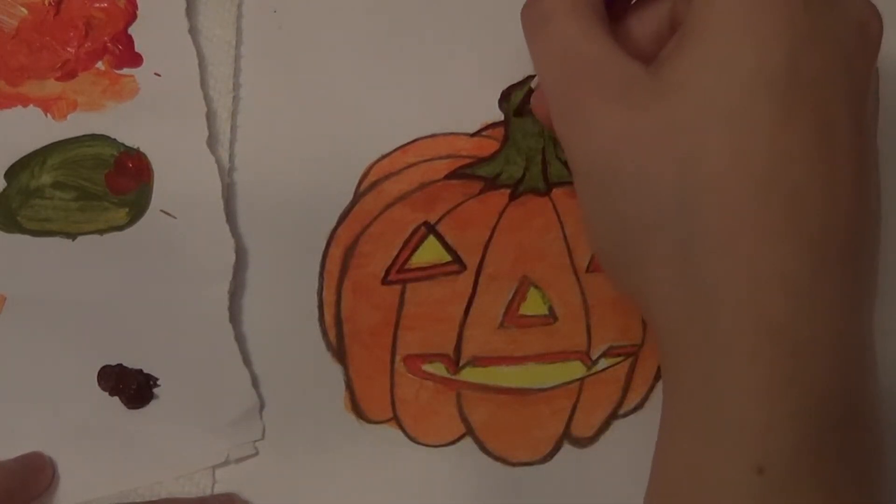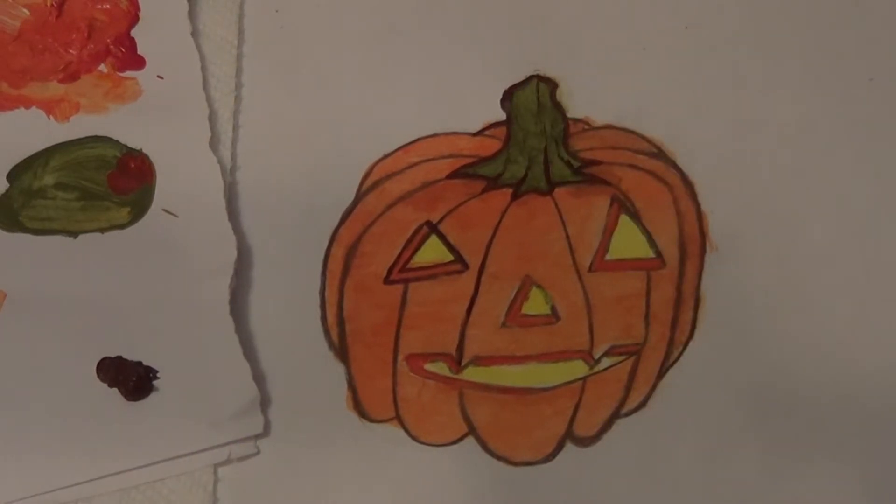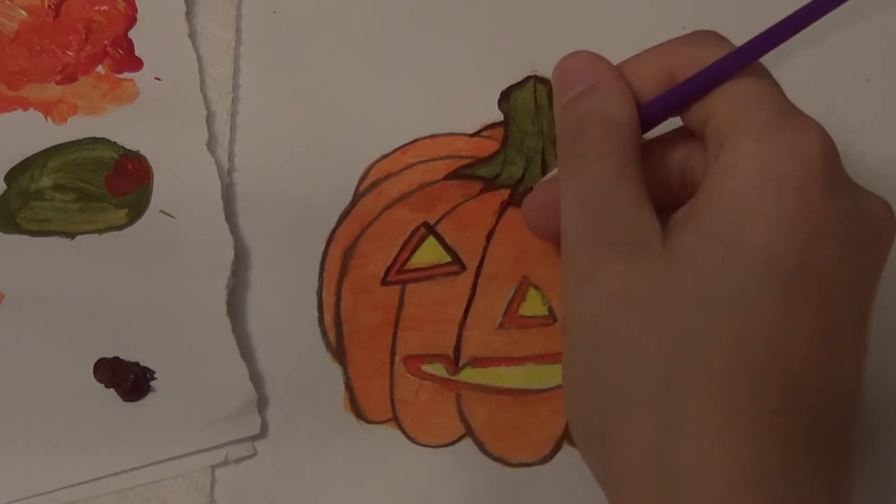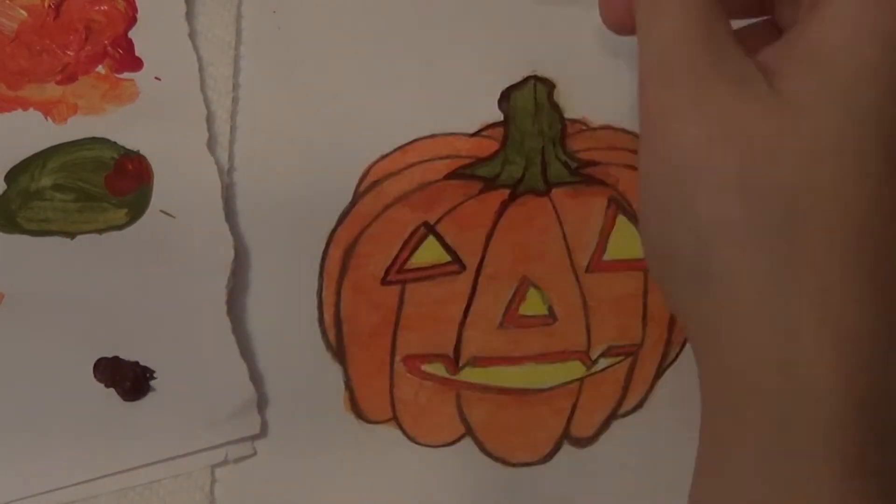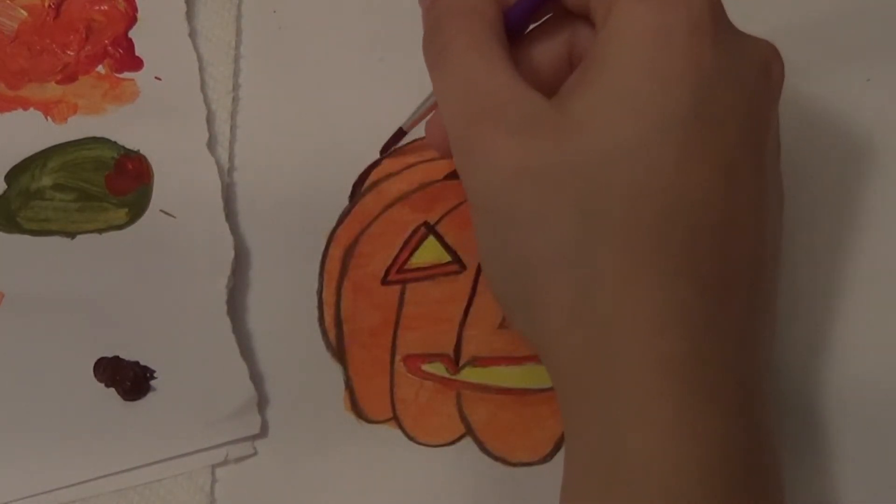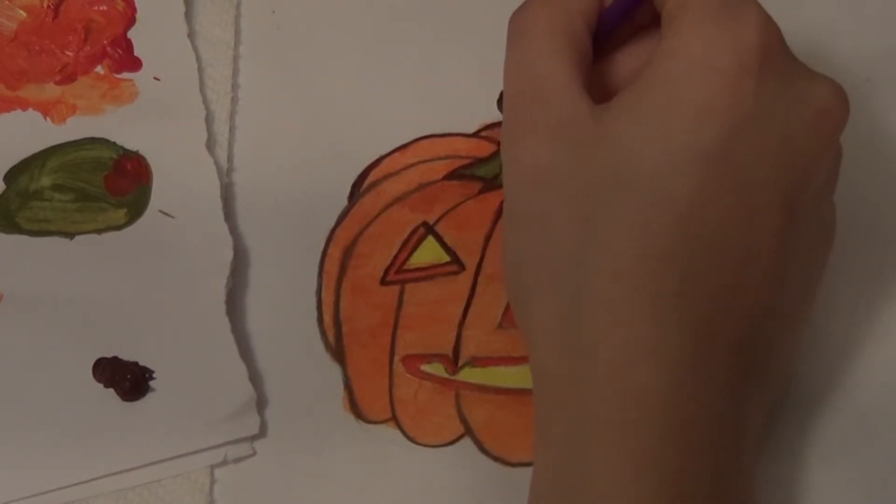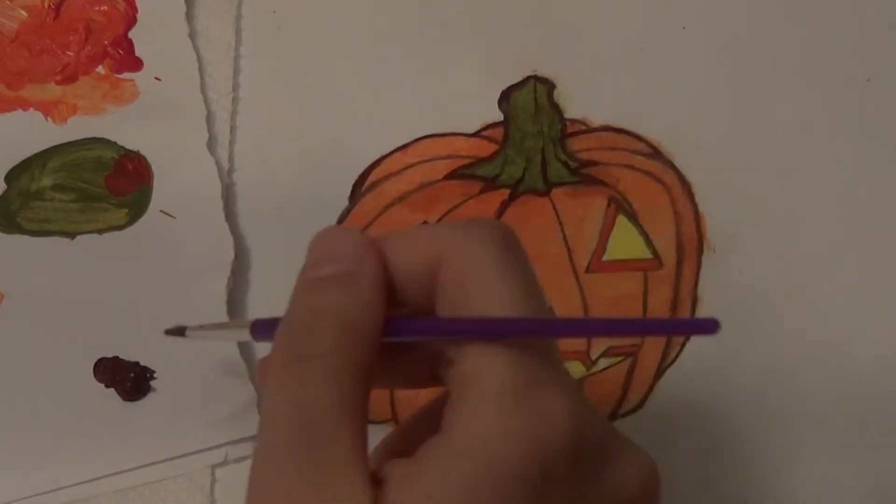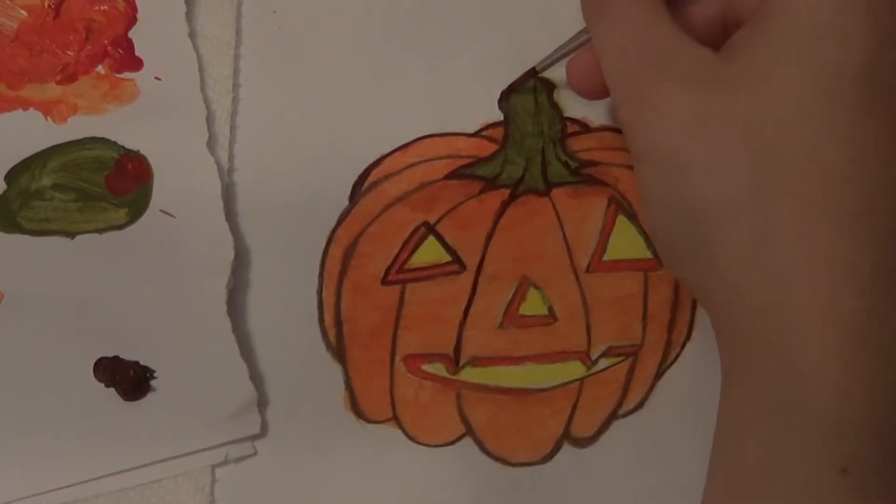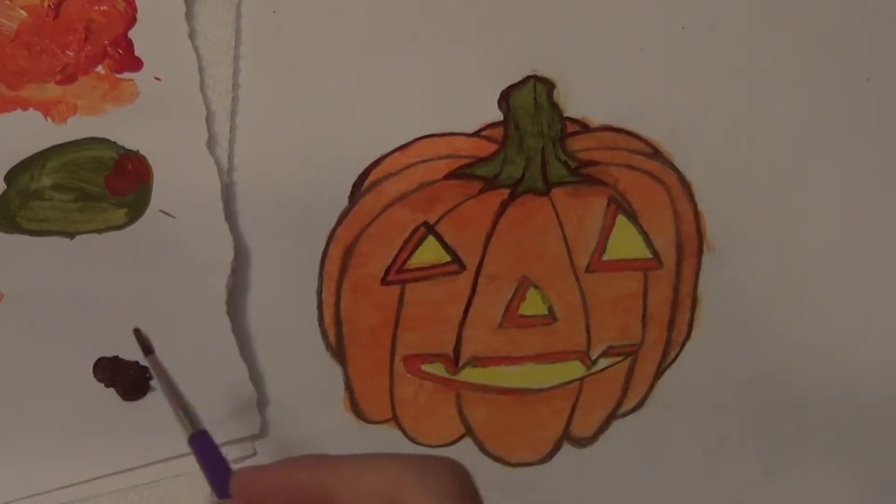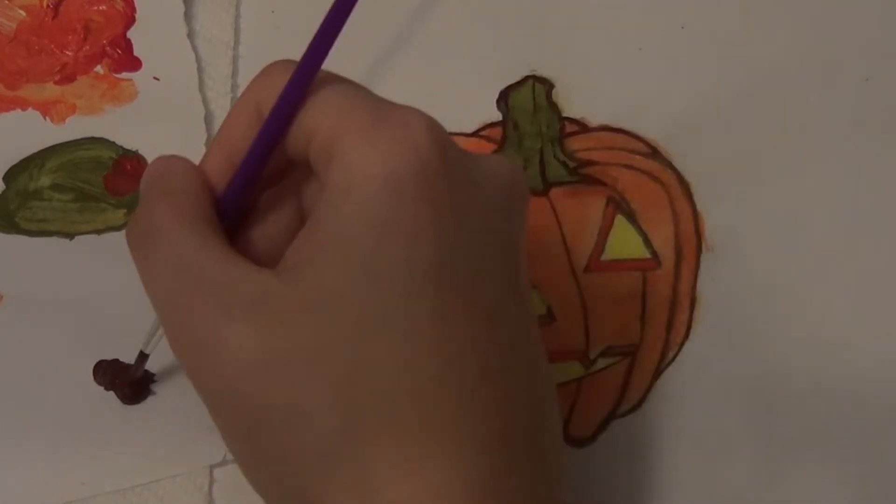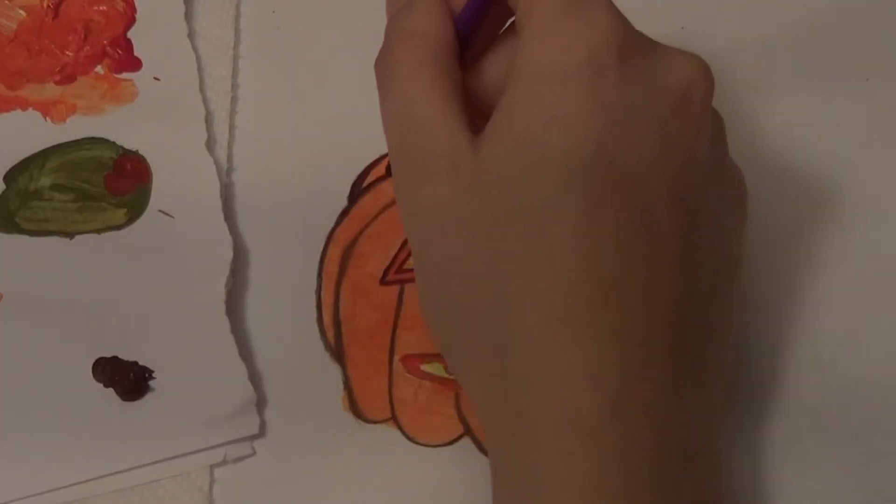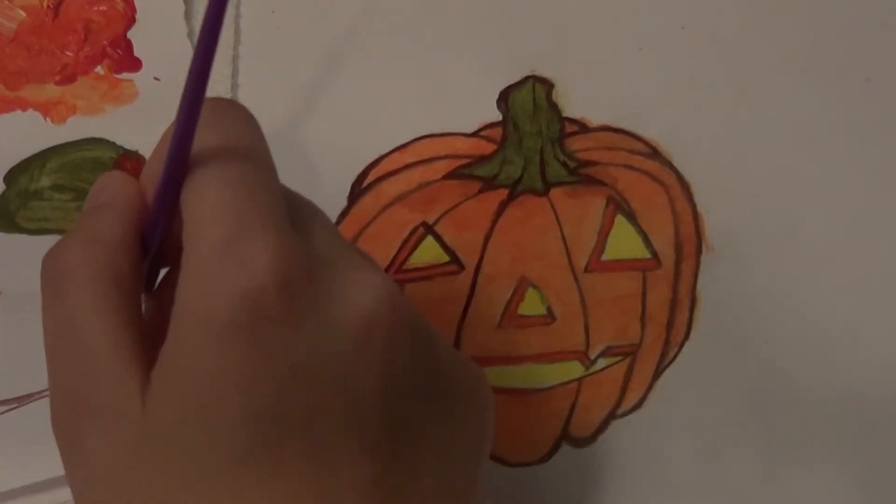So to make the jack-o-lantern look more three-dimensional and add some shading I'm going to make my brown lines a little thicker towards the bottom and then make them not as thick towards the top. So if there's a light that was kind of shining downward on it you'd probably get a shadow coming around the bottom, although I didn't really consider how a light would shine from the inside outward.